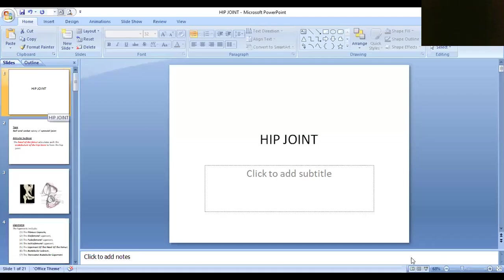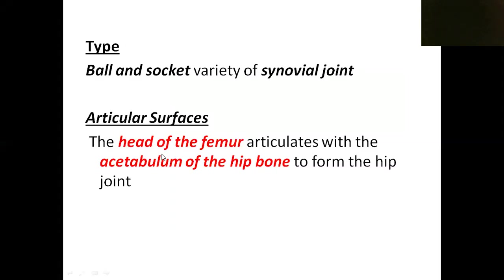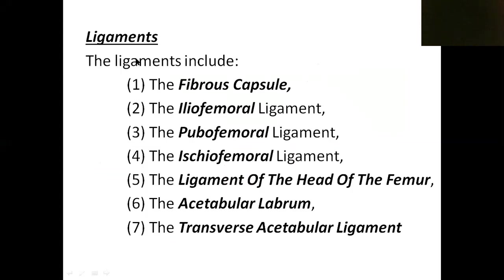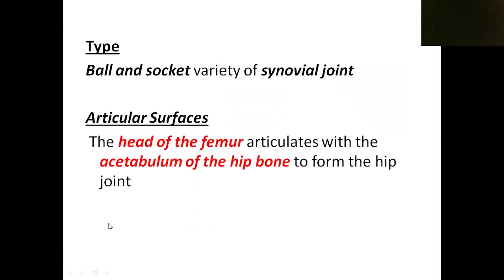Today we are going to discuss the hip joint. To explain a joint, we first write about the type, then articular surfaces, then ligaments, then movements and muscles producing movements, then associations including arterial supply, nerve supply, and intra-articular structures. These are the major headings for any joint.